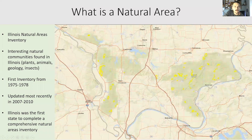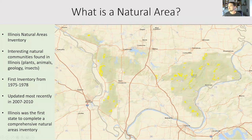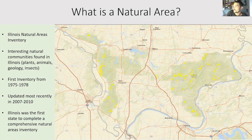I've been using the term 'natural area' a lot — so what is a natural area? These are sites referred to as Illinois Natural Areas Inventory sites, identified because of their interesting natural communities representative of Illinois. The first inventories were conducted from 1975 to 1978, and updated most recently in 2007 and 2010. Illinois was actually the first state to have a comprehensive natural areas inventory.